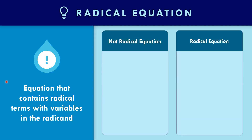What could be a not-radical equation? An example is x squared plus the square root of 5 equals 3. Another example is 0 equals x to the 4 plus the square root of 3. These are not radical equations because the radical has no variables inside it — only constants. So these are not radical equations.